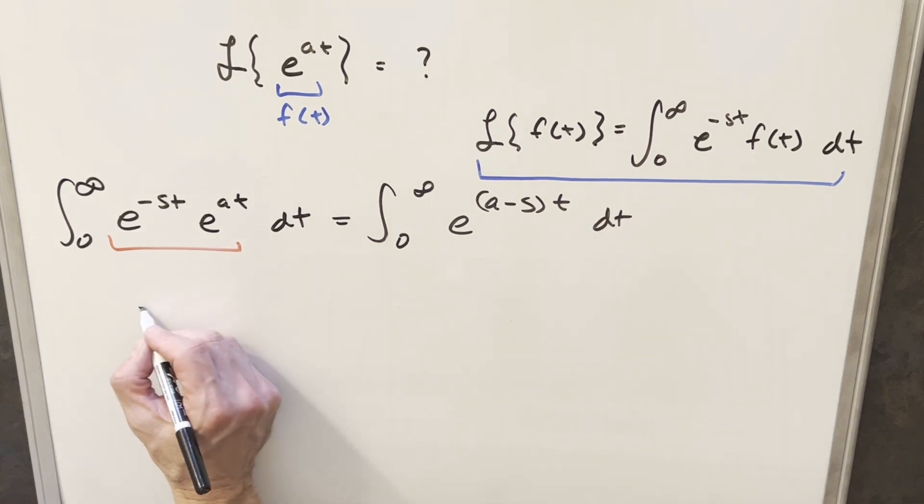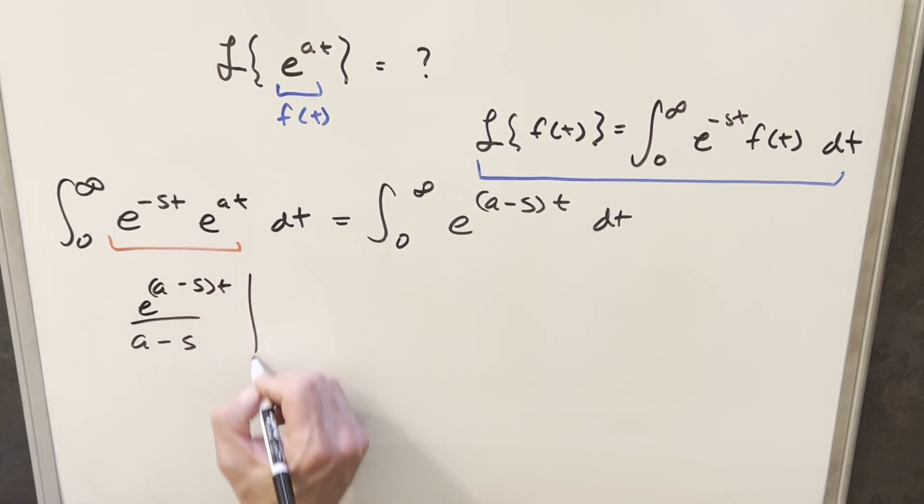We'll just go ahead and integrate, and we're going to have e to the (a minus s)t, and then we just need to take this out in the denominator as a minus s. And this is all evaluated from 0 to infinity.